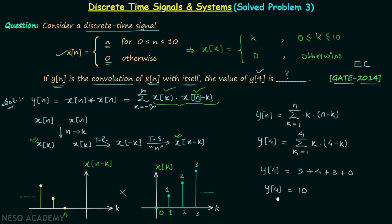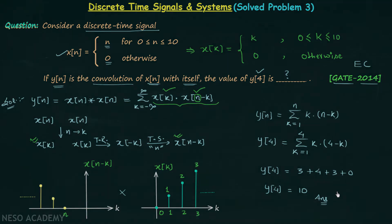So the answer is y4 equal to 10. As we already had discussion on discrete time convolution, all these points are not difficult to understand. This is all for this lecture — see you in the next one.